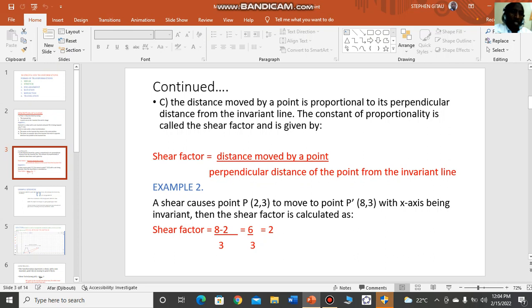Example two: a shear causes a point P(2,3) to move to point (8,3) with x-axis being invariant. The shear factor is the movement by that point, 8 minus 2, divided by the perpendicular distance of the point from the invariant line, 3, and we get 2.